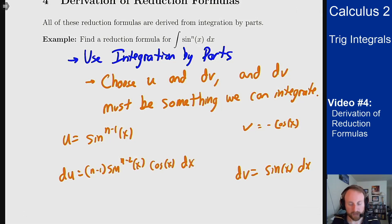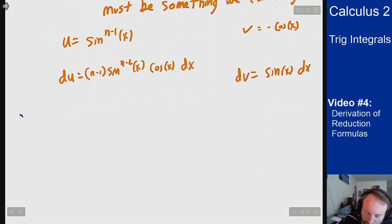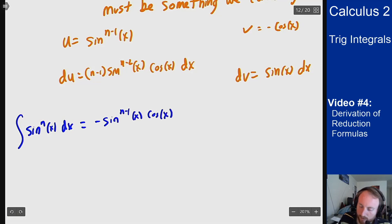And now I can write out the integration by parts. So integral of udv which is sine to the n of x dx equals uv, so minus sine to the n minus 1 of x cosine of x minus the integral of vdu negative cosine of x times n minus 1 sine to the n minus 2 of x cosine of x dx.